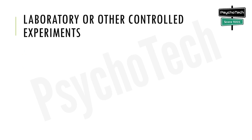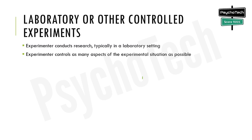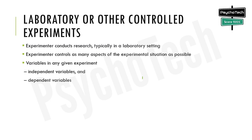The first method is laboratory or other controlled experiments. In controlled experimental designs, an experimenter conducts research typically in a laboratory setting, controlling as many aspects of the experimental situation as possible. There are two kinds of variables in any given experiment: independent variables and dependent variables. Irrelevant variables are held constant and are called control variables.